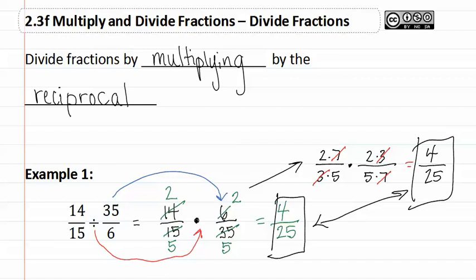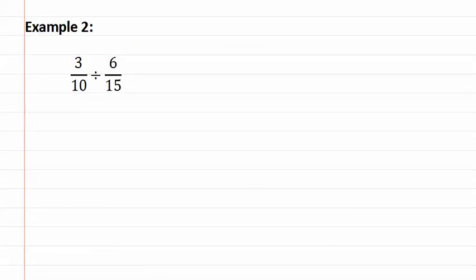Let's look at example two. Example two is three tenths divided by six fifteenths. Remember, when dividing, we always write down the first fraction.